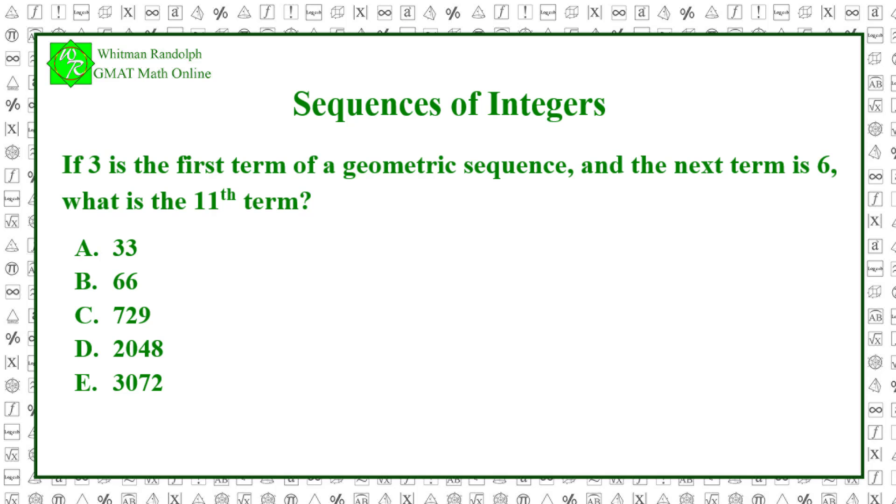Let's find the solution. If 3 is the first term and 6 is the second, then the constant value that's used to find the next term is 2. That is, 6 equals 3 times 2.